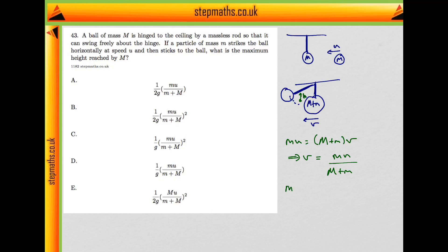So that tells us that m plus m, their combined mass, g times the height they move through, will equal one half times their mass times their speed squared. That's mu over m plus little m squared.